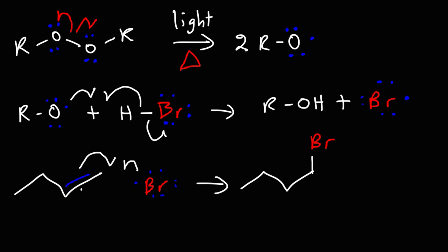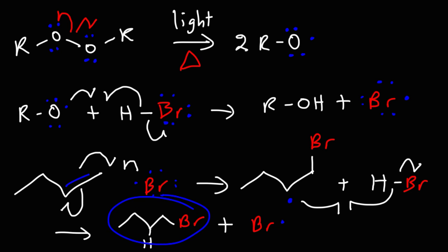Now, we need another half arrow to put a radical there. So that's going to be the intermediate for this reaction. Now, in the next step, the radical is going to react with HBr in a propagation step. And so the final product is going to be 1-bromobutane, and of course, we're going to regenerate the bromine radical. So that's the mechanism for the reaction between an alkene and HBr and peroxides.